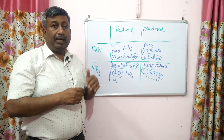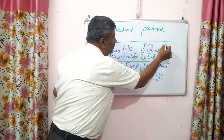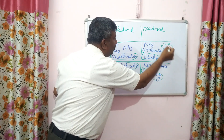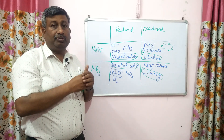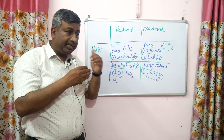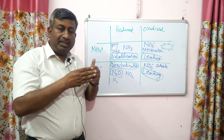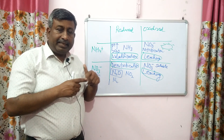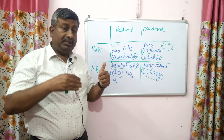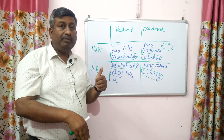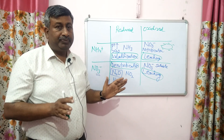Nitrates are highly soluble and carry a negative charge. Soil particles also carry a negative charge, so nitrates are repelled by soil colloids and are not retained on soil particles. Ammonium ions, on the other hand, carry a positive charge, so there is attraction between ammonium and soil particles — ammonium is retained on clay mineral surfaces. But nitrate, being negatively charged like clay particles, always remains in soil solution and if not absorbed by the plant, it moves downward with percolating water during rainfall or irrigation, causing leaching loss.